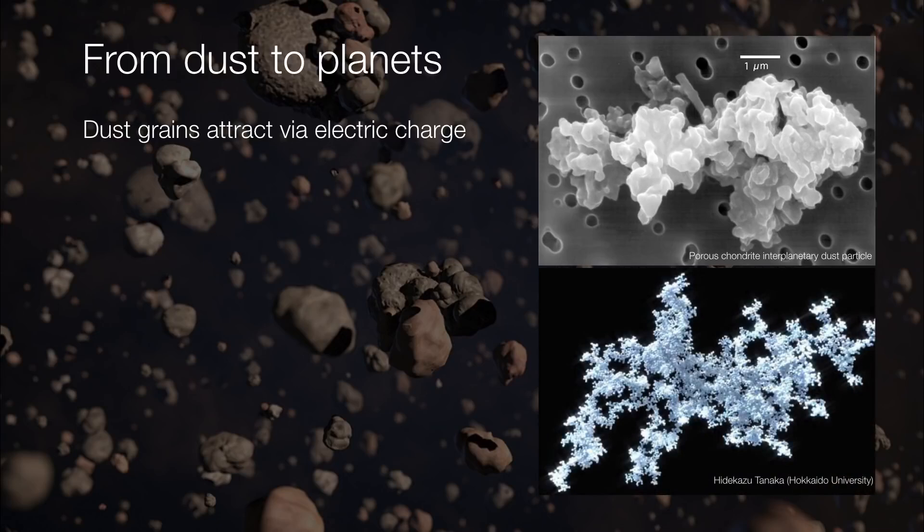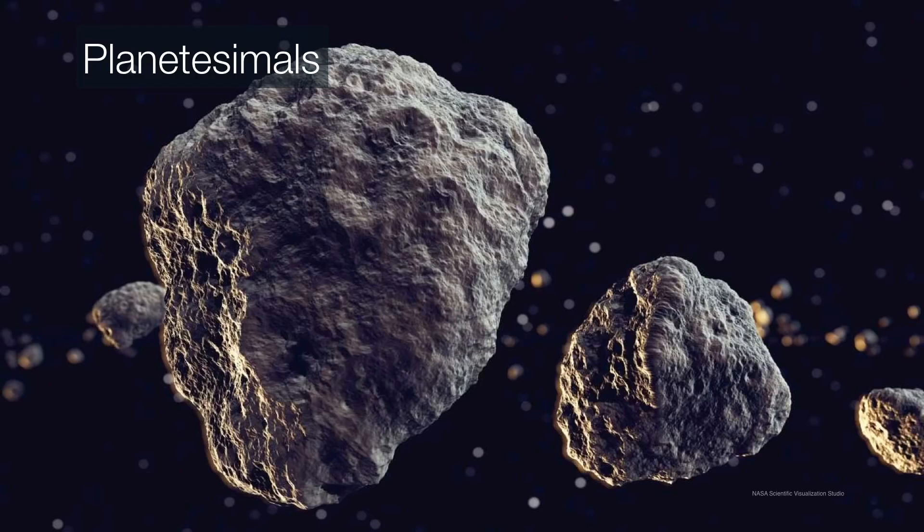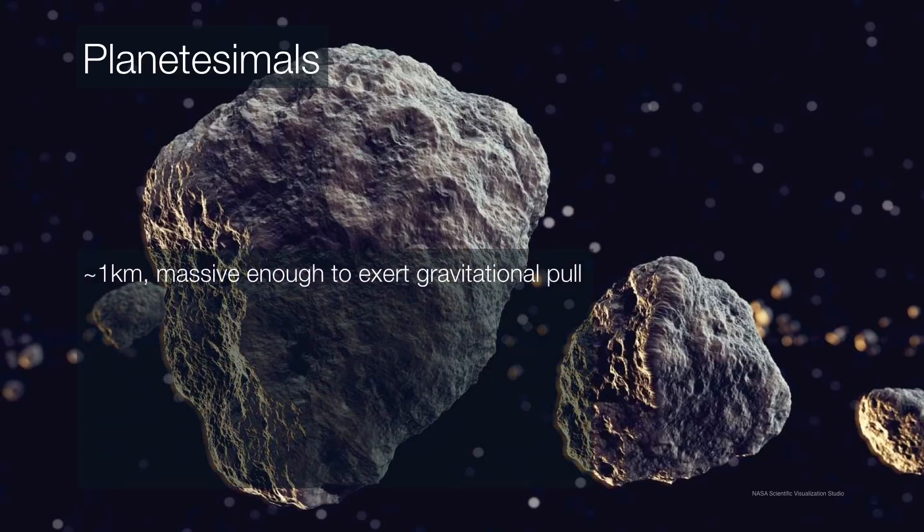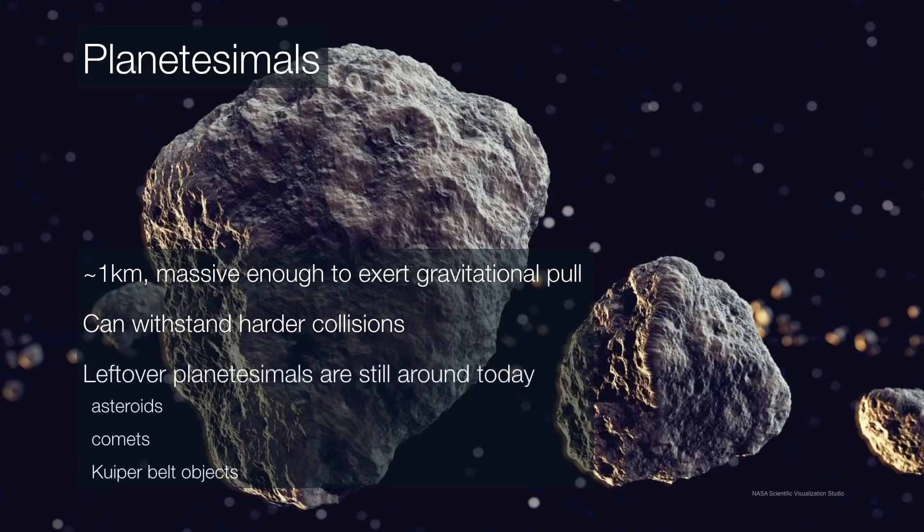As a matter of fact, they can grow quite large by undergoing very gentle collisions, which allows them to grow into rocks, then into boulders. Anything harder or faster would break these things apart. But as these things grow, they can withstand harder and stronger collisions until they grow into what are now called planetesimals. At planetesimal sizes, at about one kilometer, they're massive enough to exert a gravitational pull on one another. In fact, we see leftover planetesimals around the solar system today - they are modern-day asteroids, comets, and Kuiper Belt objects.